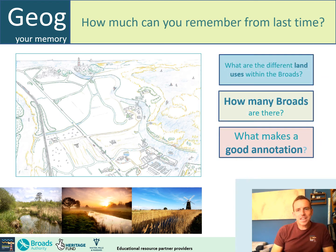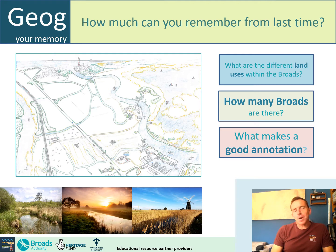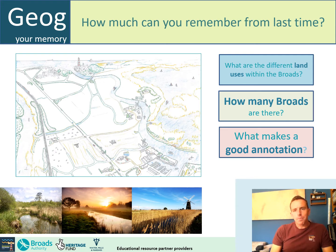This is lesson three and, just like last time, we're going to jog our memories and see how much we can remember from last time. I've got three questions - you can choose to write these down in the backs of your books, on a piece of scrap paper, or just say them out loud as I go through them. Those three questions are just to jog our memory of what we did last time. The first is: what are the different land uses within the Broads? There are lots of them, so if you can name several, that would be great.